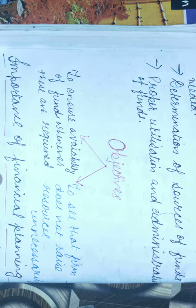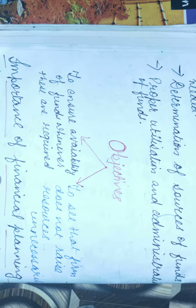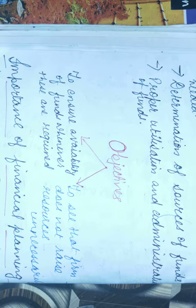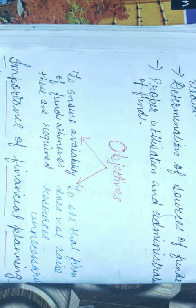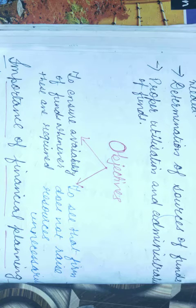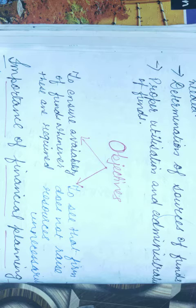Next objective is to see that the firm does not raise resources unnecessarily. यह भी देखना बहुत जरूरी है कि firm बिना जरूरत के fund resources न raise करे। मालो आपके पास already 5 new कपड़े हैं, फिर भी आप एक new कपड़ा खरीदना चाहते हैं — that is unnecessarily. इसी तरीके से firm के पास already funds हैं जिससे वो smoothly operate कर सकें, but also they are insisting on raising more funds — तो financial planning में यह भी देखना है कि वो unnecessarily fund न raise करें।